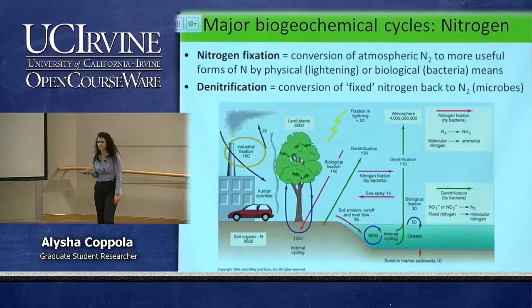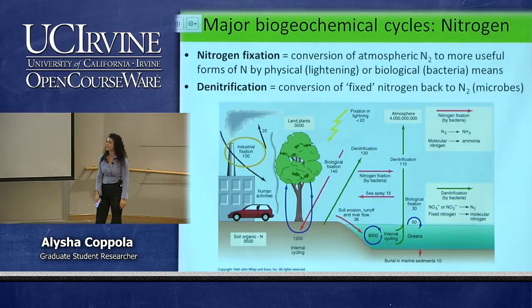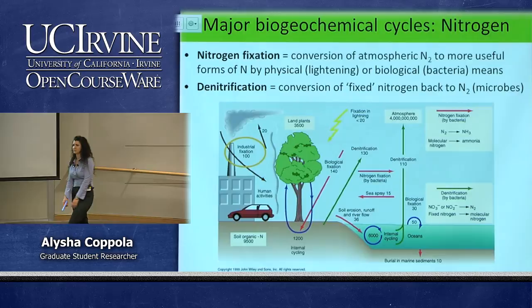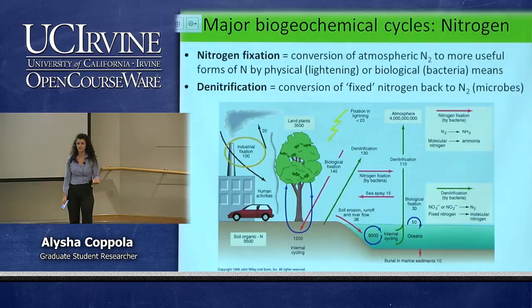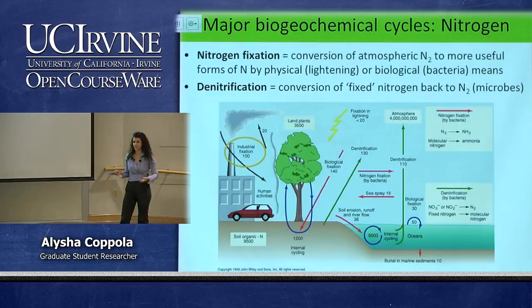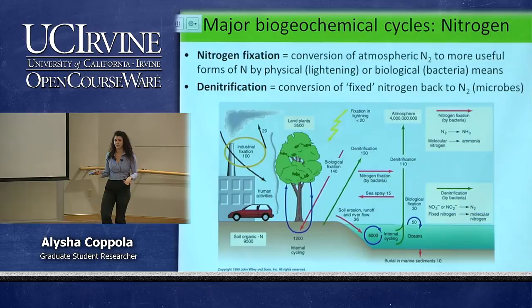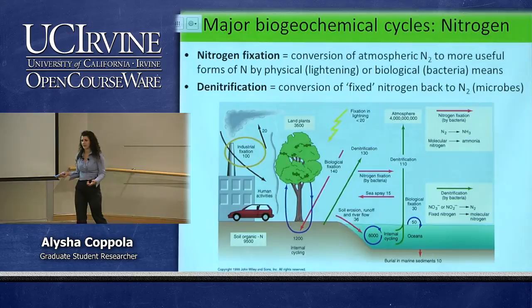Another major biogeochemical cycle is the nitrogen cycle. Like phosphate, nitrogen is very important for growth and is often a limiting factor in plant growth. Nitrogen makes up 78% of the atmosphere, yet even at that abundance it's often limiting for plant growth. The reason is that N₂ in the atmosphere is relatively inert and not very usable by marine life or plants. The conversion of N₂ to nitrate or other forms — called fixed nitrogen — is necessary for organisms to take it up.